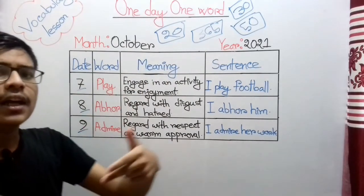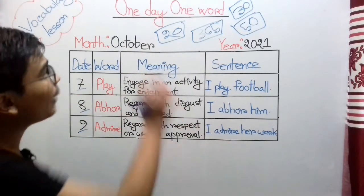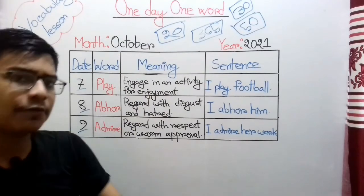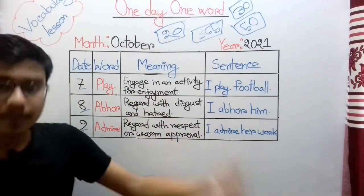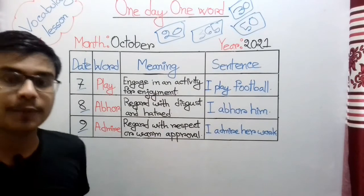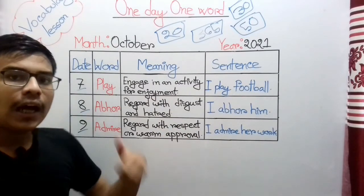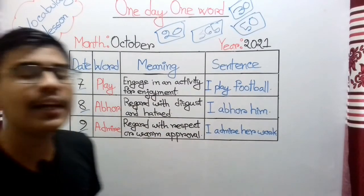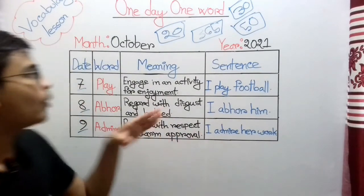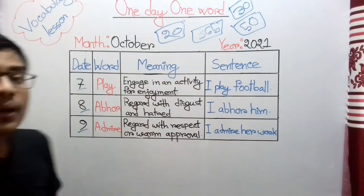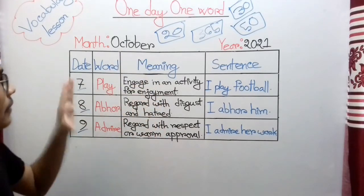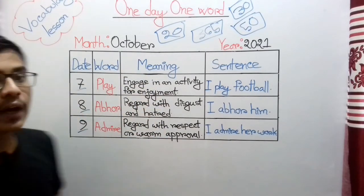That's why I think if you are just a beginner, you can start with this method — one day one word. After that you may learn two words in one day, then three words per day, then four words per day. By this way you can increase your word limit per day and improve your vocabulary.